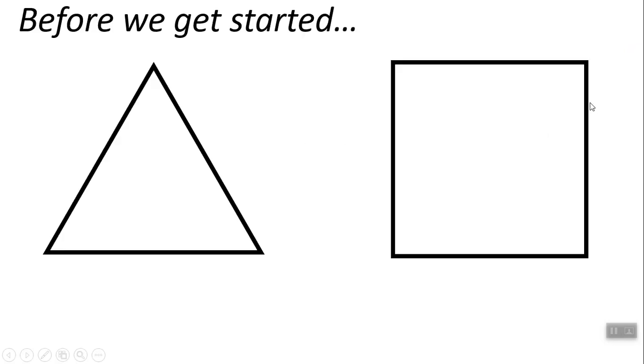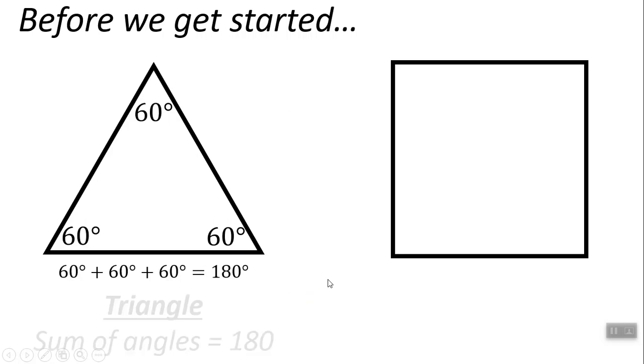Before we get started, you need to understand a couple things. You need to understand that any triangle, its angles will add up to 180 degrees. The sum of the angles is going to always be 180 degrees. For quadrilaterals, like this square, you know that they're all 90 degree angles.